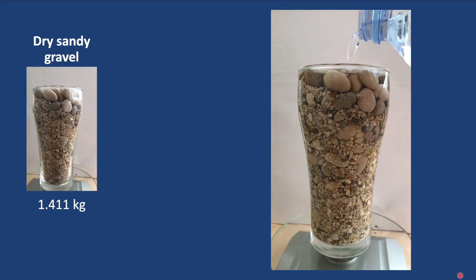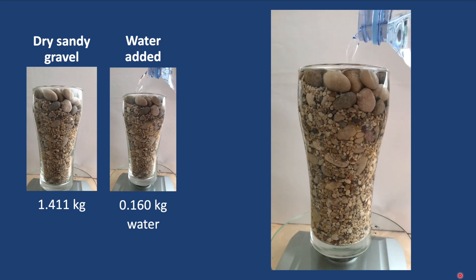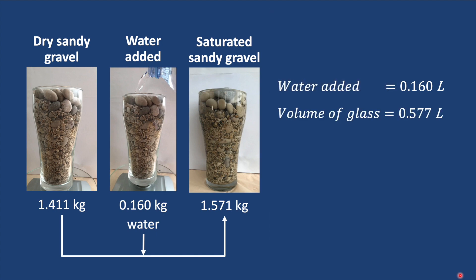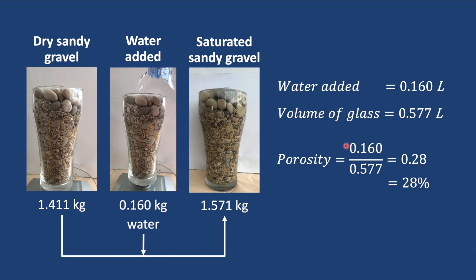In our experiment we added 0.16 kilograms of water to our dry sandy gravel in order to fully saturate it. That means we added 0.16 liters of water to our sample. The volume of the glass is 0.577 liters. So our porosity is the volume of water divided by the volume of our sample, which comes out at 0.28 or 28 percent. Note that this is quite close to our previous estimate of 30 percent, which we calculated from the density of the sample assuming it is 100 percent limestone. Check out the previous video to see how we did this.